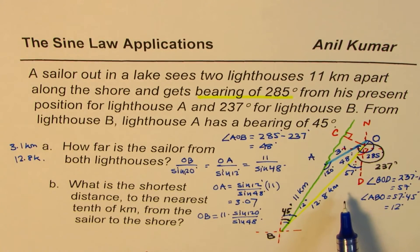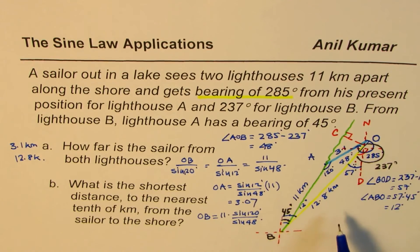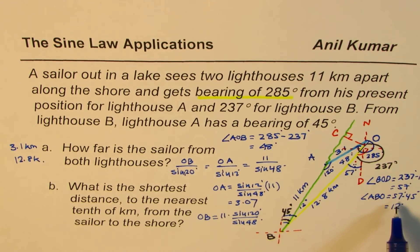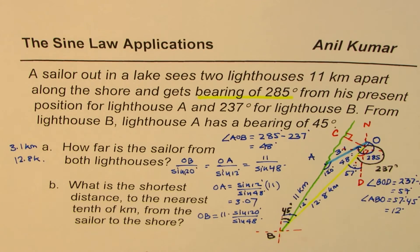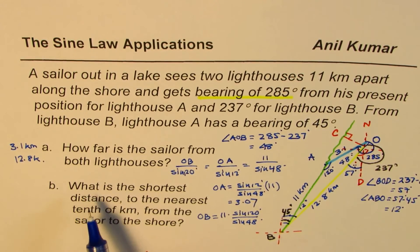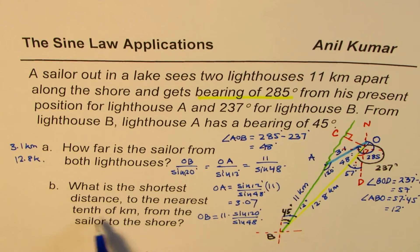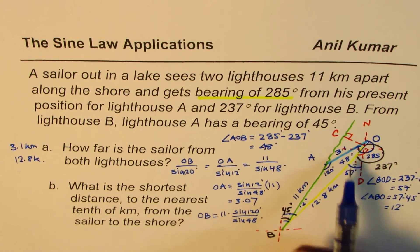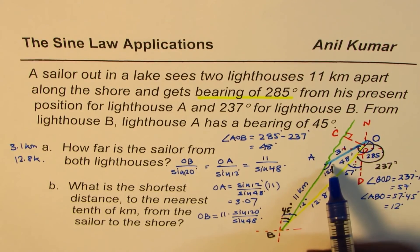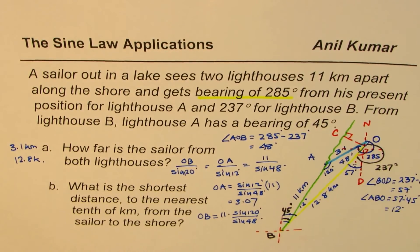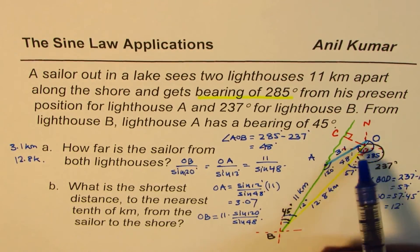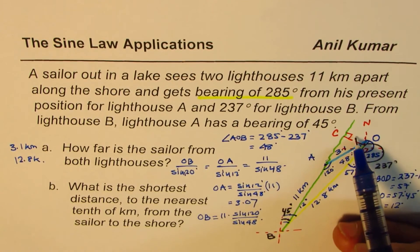We have done the first part. The major difficulty is sketching this diagram, which is why we took so much time on it. Once you sketch, you find all the angles just as we did. Now let's look into the second part, which is another very critical part of the question and could have been an independent question.